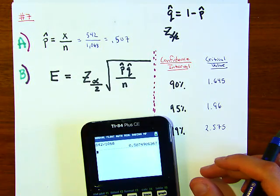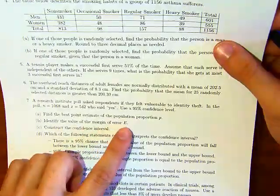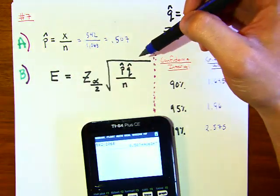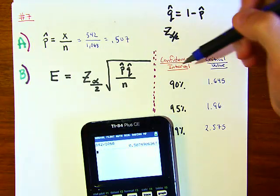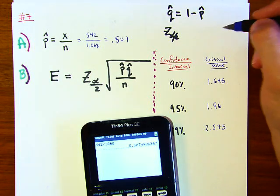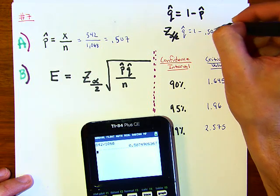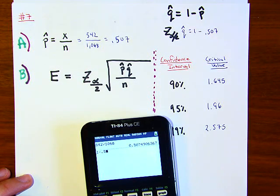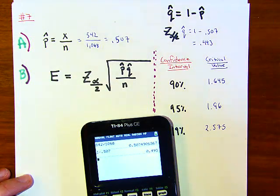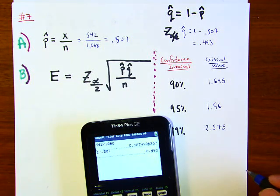To find the identify the value of the margin of error E. For part B, to find the margin of error we need this formula over here. It looks complicated but it's not too bad. Here we have p-hat, so p-hat is 0.507. Q-hat will just be 1 minus p-hat, so q-hat equals 1 minus 0.507, and that equals 0.493. That will be our q-hat.